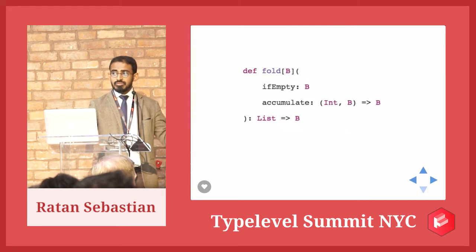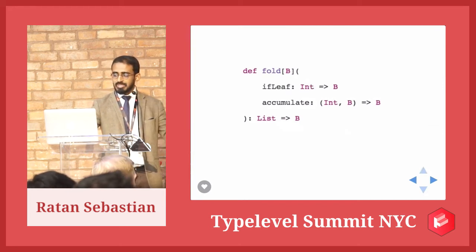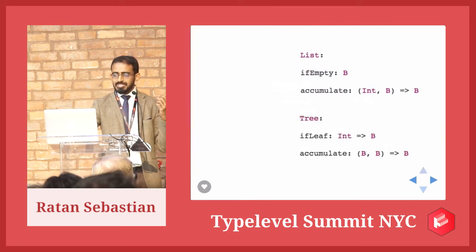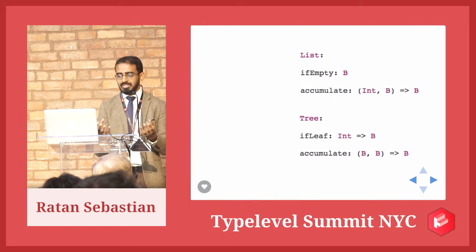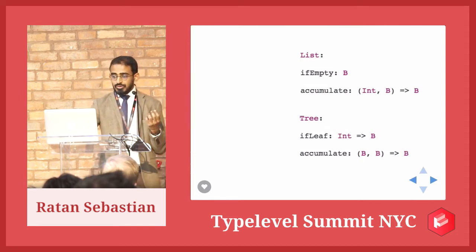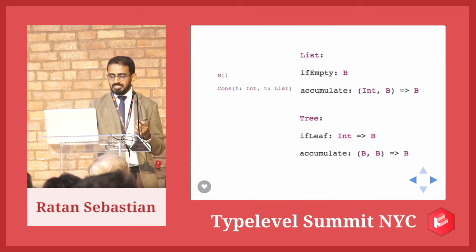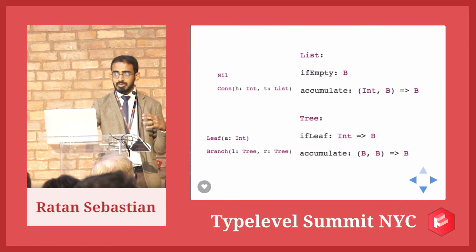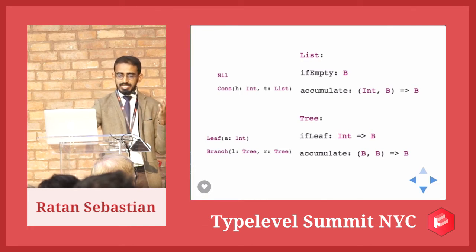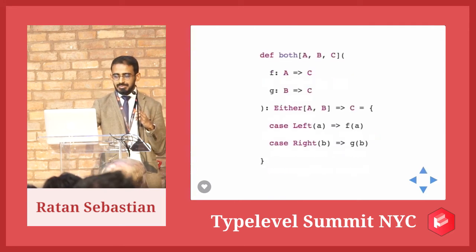Let's compare the inputs of the fold function for list versus tree. For list we had ifEmpty and accumulate; for tree we have ifLeaf and accumulate. There's not a lot of similarity here — in our quest to find a description of fold that is independent of a data structure, we seem stuck because we can't get a unified representation of the inputs to the fold function. We get ourselves out of this by recognizing that the constructors for the respective data structures look a lot like the inputs to these functions. Nil takes nothing and returns a list; ifEmpty takes nothing and returns a B. Cons takes an int and a list and returns a list; accumulate takes an int and a B and returns a B. Leaf takes an int and returns a tree; ifLeaf takes an int and returns a B. Branch takes two trees and returns a tree; accumulate takes two Bs and returns a B.